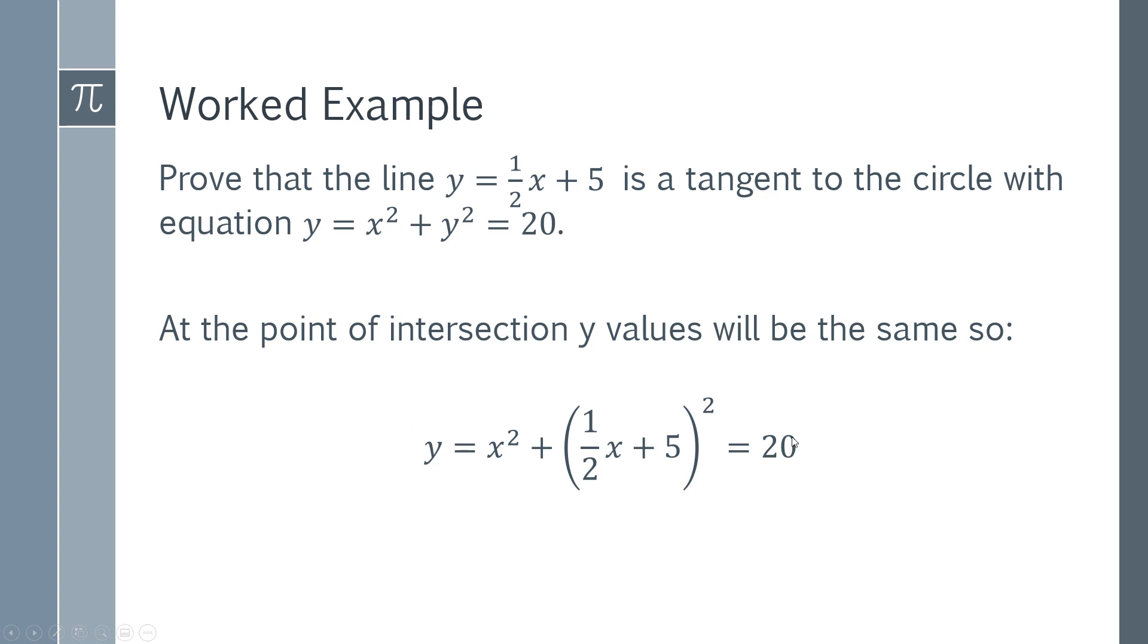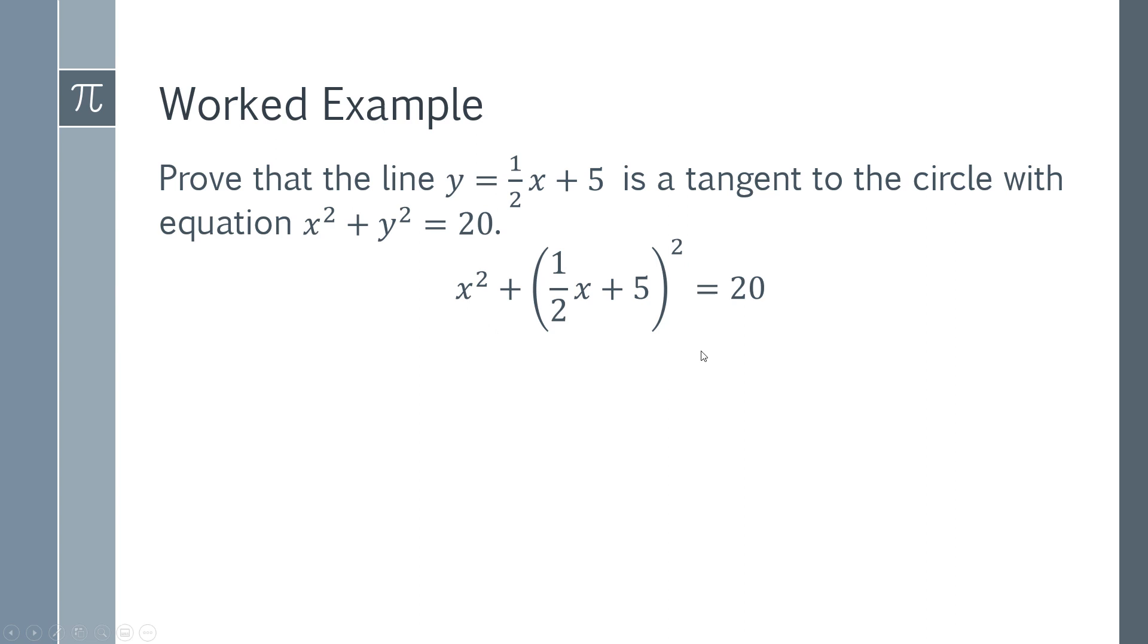We're going to do some work on this expression. Obviously we need to multiply this out. When you multiply it out you're doing 1/2 times 1/2 to get 1/4. The middle terms are going to be 2.5x plus 2.5x giving you 5x, and then you'll do 5 times 5 which gives you 25. Now we have one equation and we want to work out the solutions to this equation and figure out how many solutions we have.